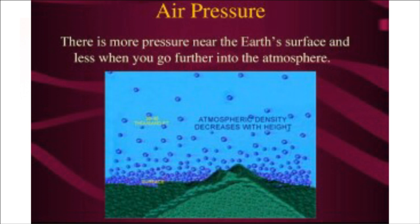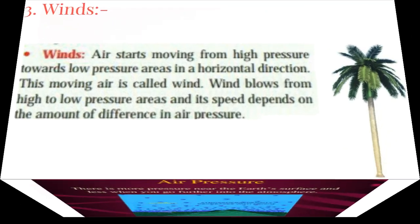There is great air pressure near the surface of the earth and it decreases with increasing height — this is vertical air pressure. These changes also occur in a horizontal manner, which gives rise to wind. As we move up to a greater height, the pressure decreases.